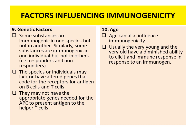Then is the genetic factor. Some substances are immunogenic in one species but not in another. Similarly, some substances are immunogenic in one individual but not in another — maybe one is a responder, another is a non-responder. It all depends upon your genetic makeup. The species or individual may lack or have altered genes that code for receptors for antigen on B cells and T cells, or they may not have the appropriate genes needed for antigen-presenting cells to present antigen to the helper T cells. So the genetic factor is very important.